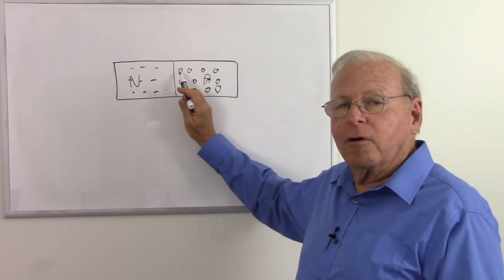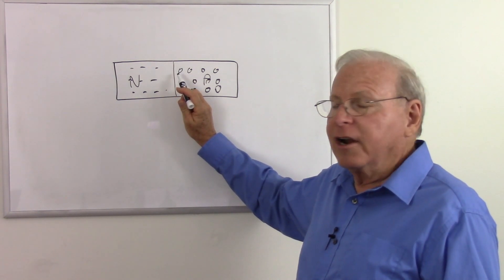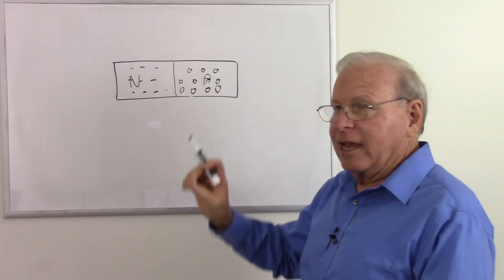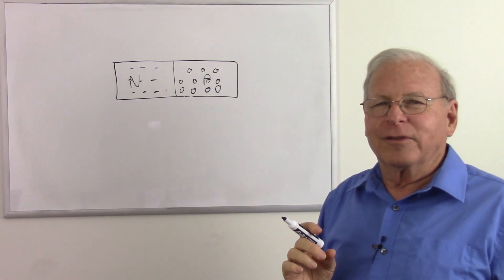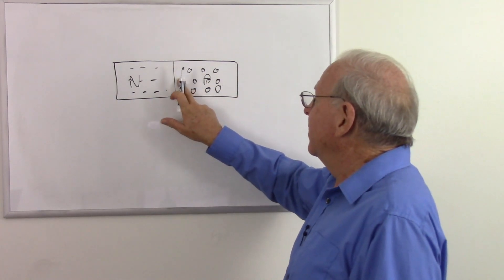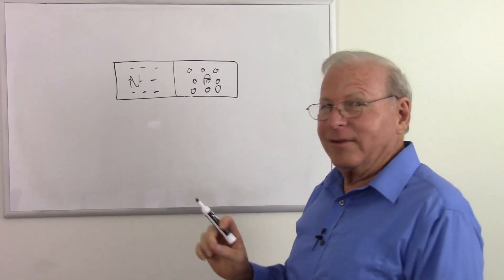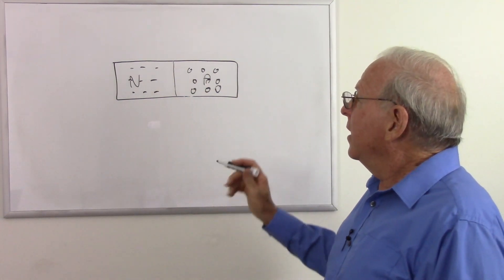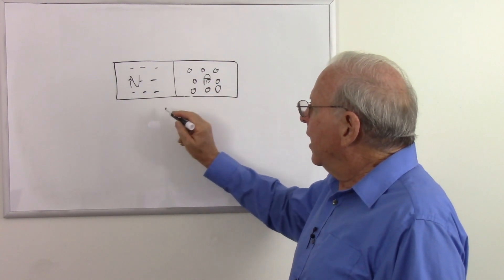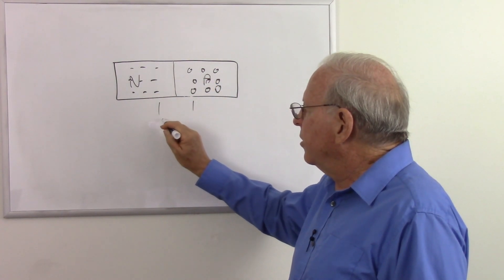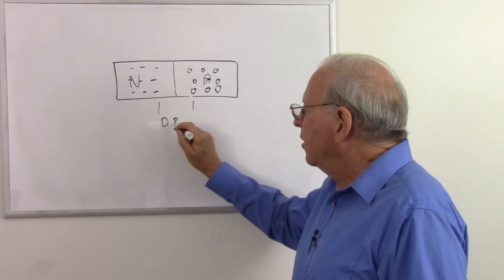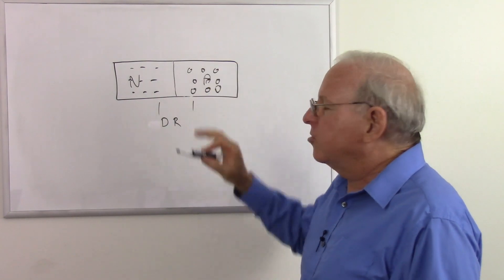When that electron goes into the hole, the electron's gone and the hole's gone. It's like we take a piece of dirt and fill in that hole at the golf course. The hole's not there anymore, is it? Neither is the dirt. We just have the green. So near the junction we have an area we call the depletion region. I'll just call that a DR, because it's been depleted of charge carriers.